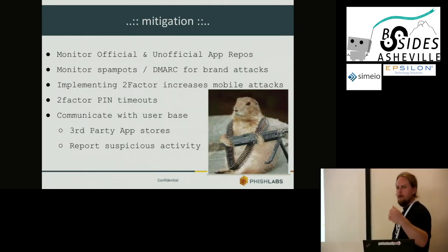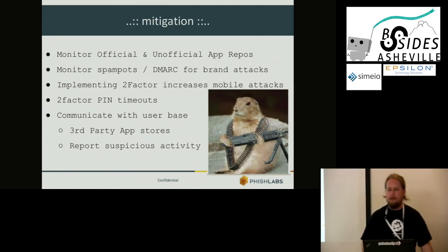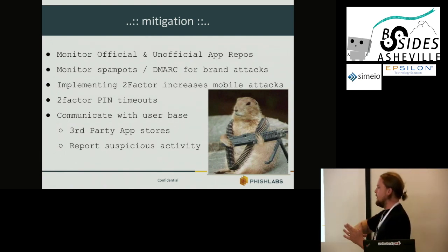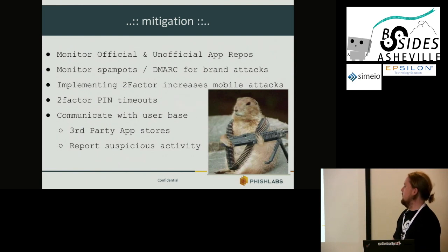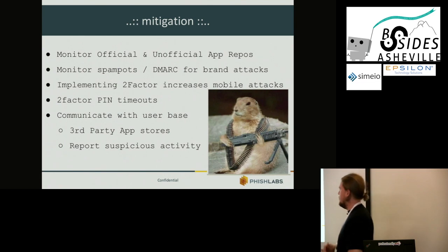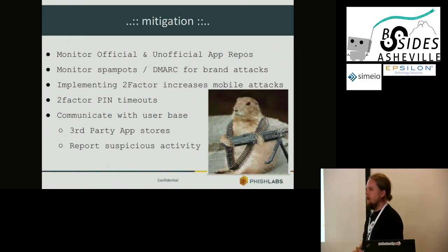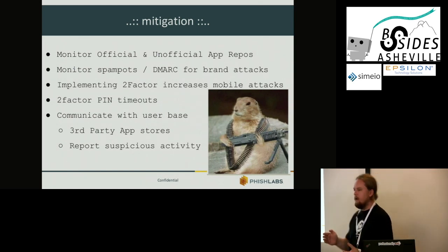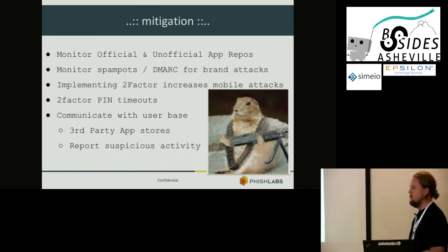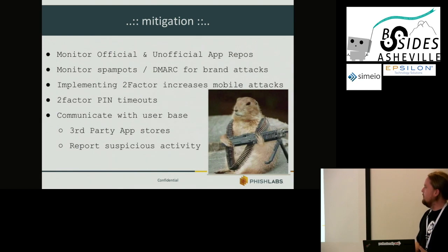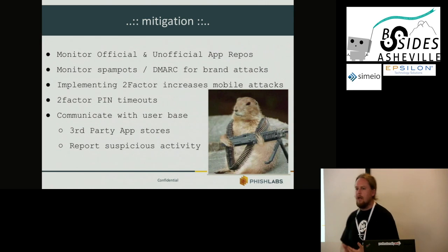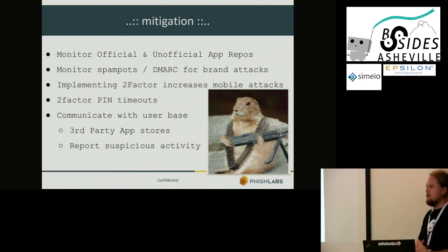On mitigation: as your company considers implementing two-factor, or if they already have, realize that while you've moved away from solely needing username and password, phishing attacks remain the main issue. Moving to two-factor introduces a new attack source requiring mitigation of malicious Android applications as well. Additional measures: manage for spam bots and DMARC for brand attacks, implement two-factor PIN timeouts, and communicate with your user base about the dangers of allowing third-party installs. Also, report suspicious activity to your security operations centers.